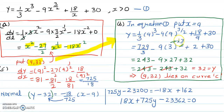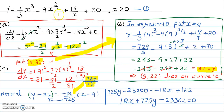For the equation of normal at (9, 32): the negative reciprocal of 725 over 18 is minus 18 over 725. Using y minus y1 equals negative reciprocal times x minus x1: y1 is 32 and x1 is 9. So y minus 32 equals minus 18 over 725 times x minus 9. Cross-multiply 725 through and you get the equation of normal.